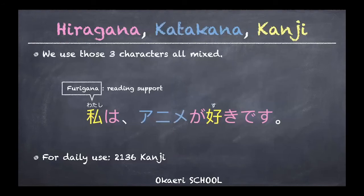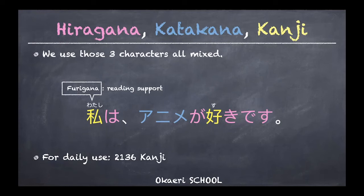So there are three different characters in Japanese, and the last one is kanji — based on Chinese characters. In this colorful example sentence you can see all three characters mixed together. The sentence means 'I like anime' in Japanese, and it uses hiragana shown in pink, katakana shown in blue, and kanji shown in yellow — all combined.